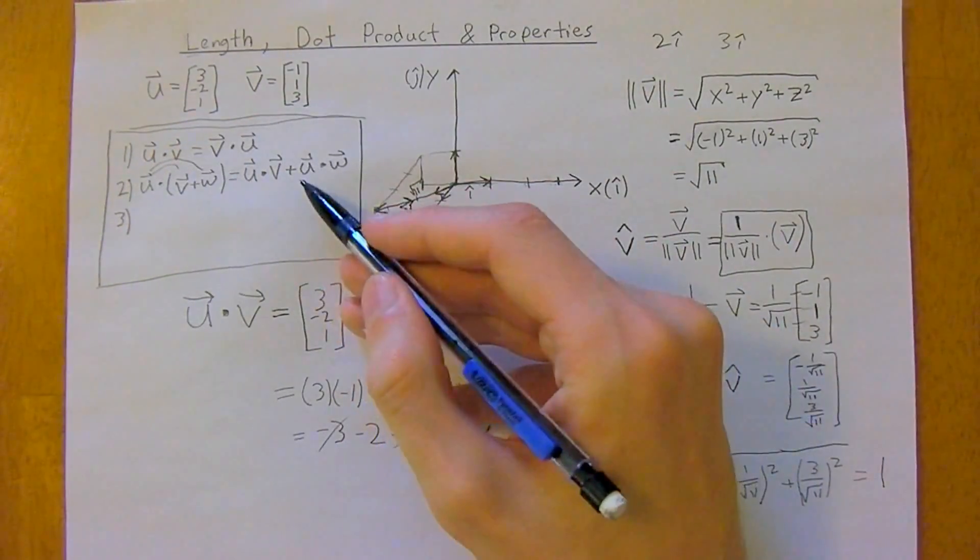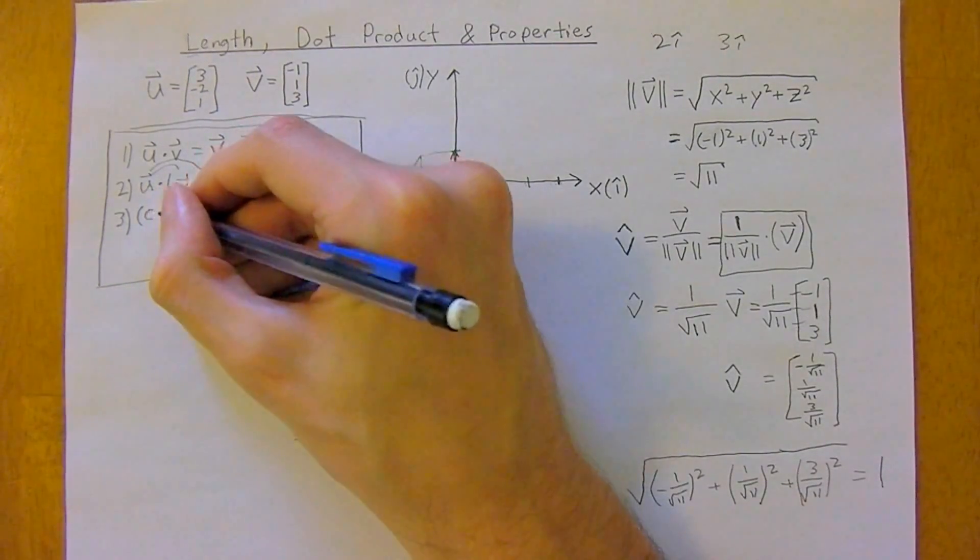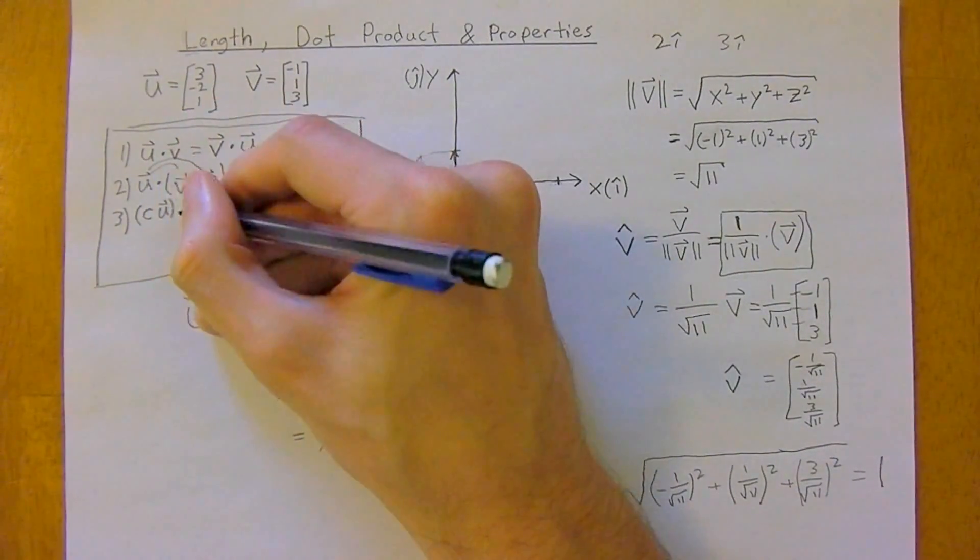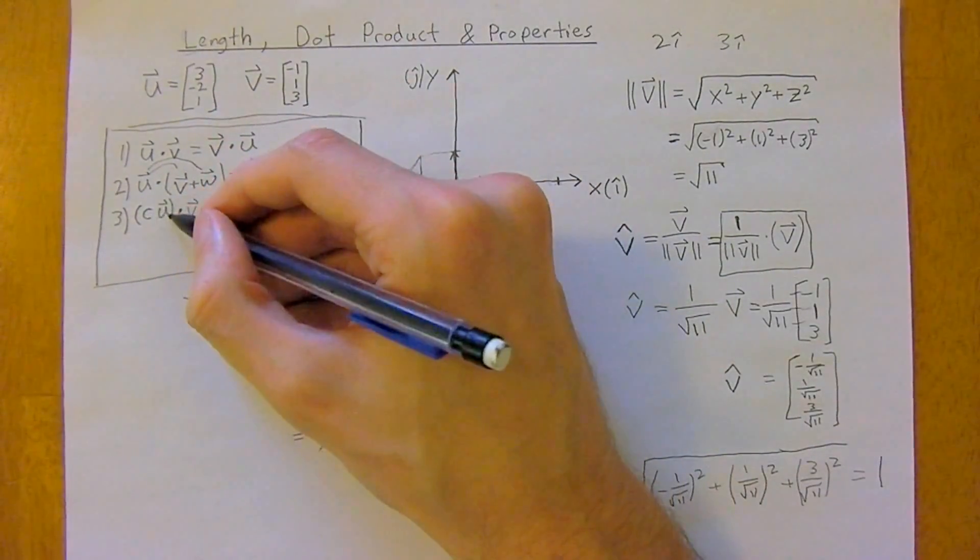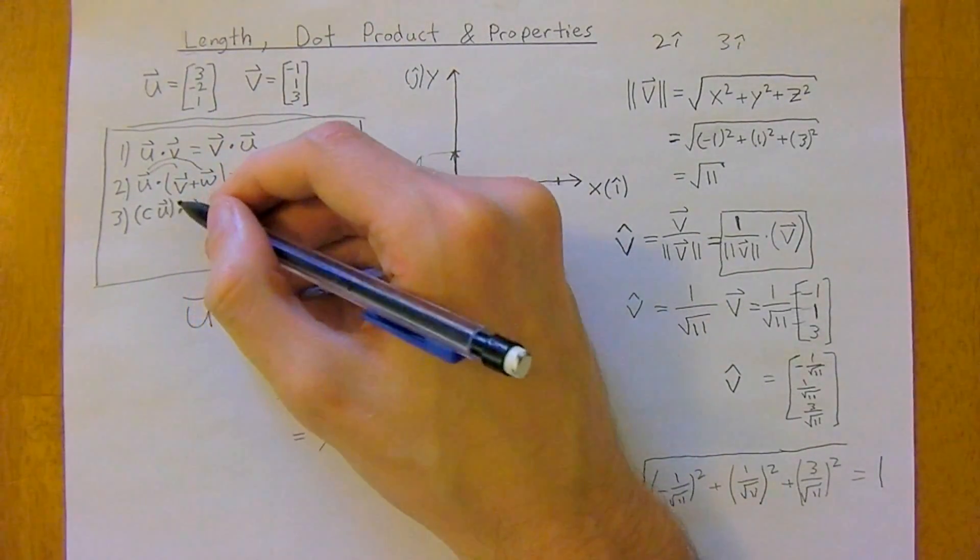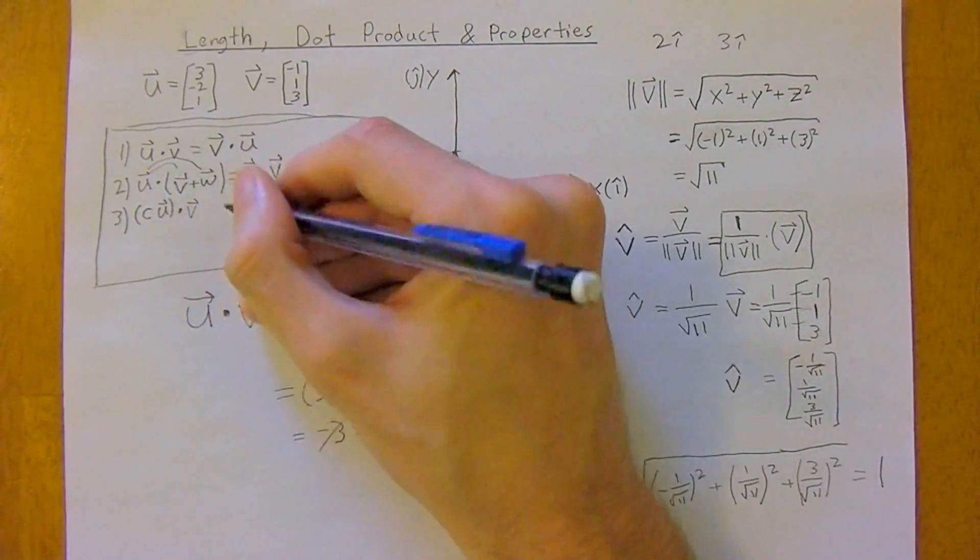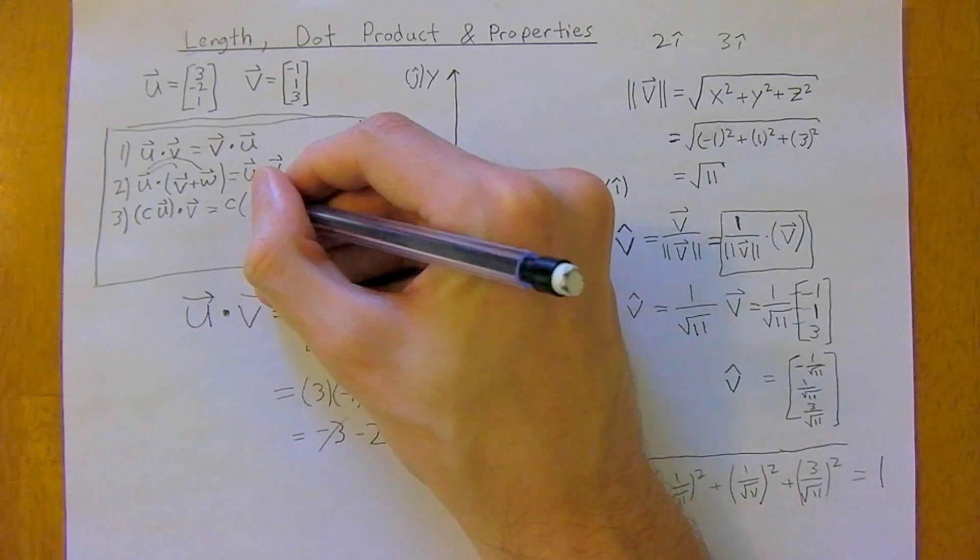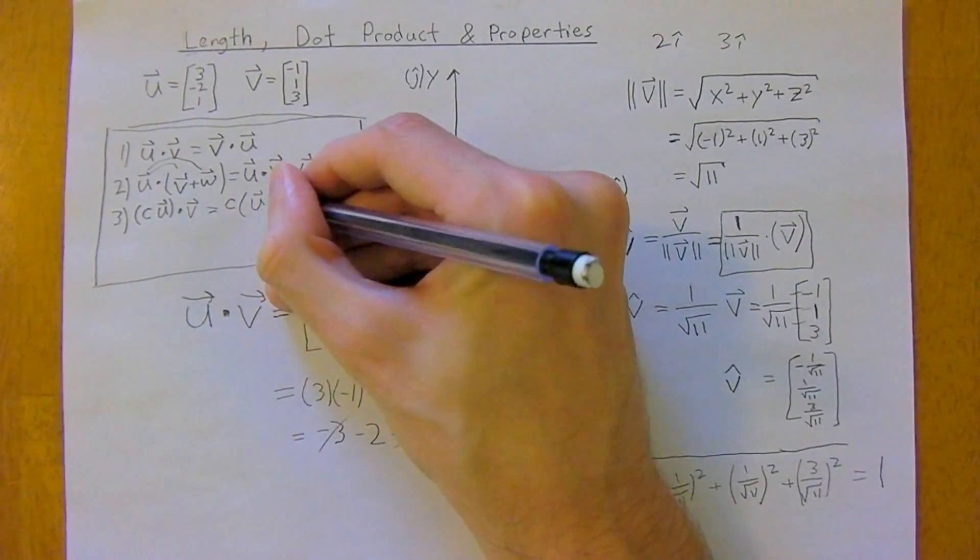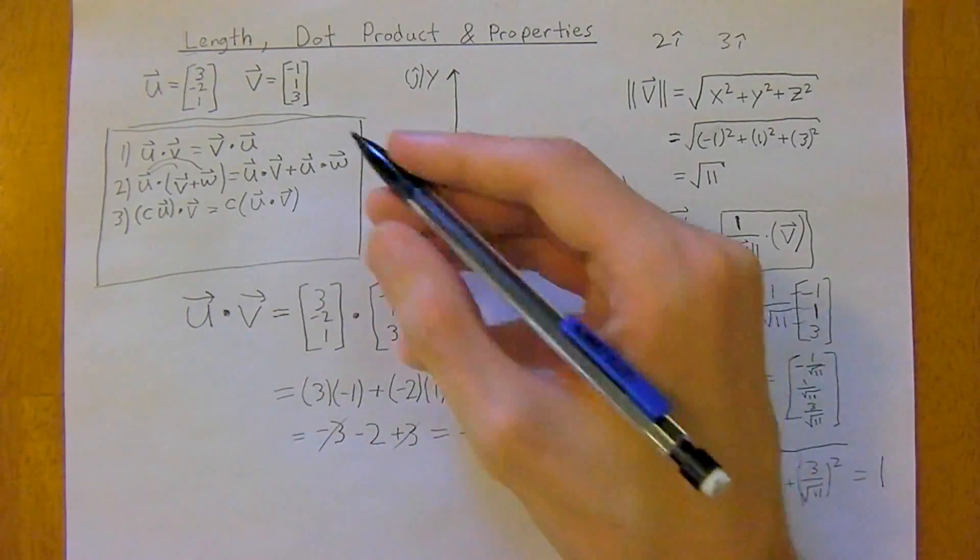The third property is we have a scalar c times vector u dot v. And you can do this because a scalar times a vector will leave you with a vector. And for the dot product, you always need two vectors. So this is equal to, just take the scalar out front, c times u dot v. And if you run through a couple examples, just invent some vectors, you'll see this is true.